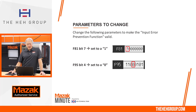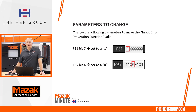The next parameter is F95, bit 4, again highlighted on the control. That is set to a 0 from the factory, where a 0 means a window prompt will appear rather than an alarm on the screen.